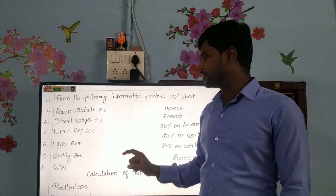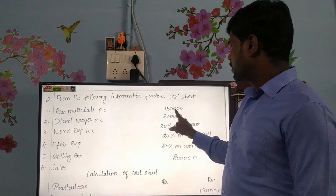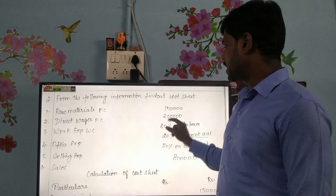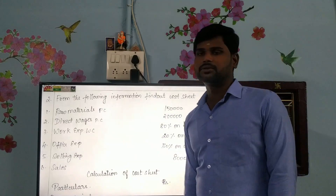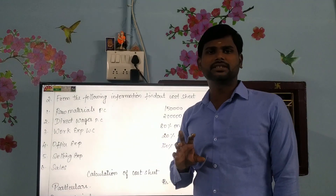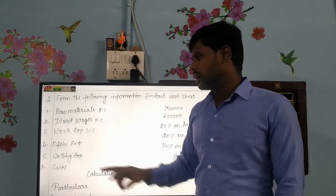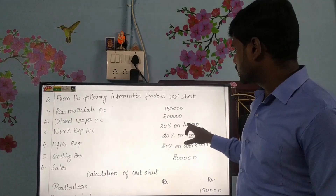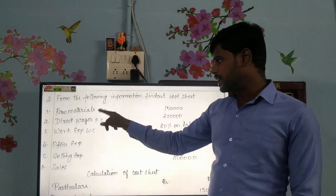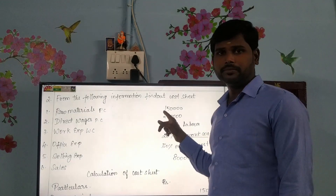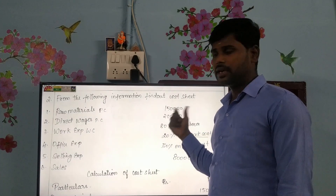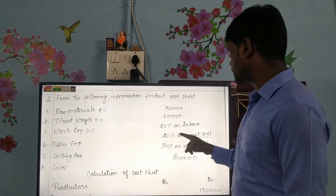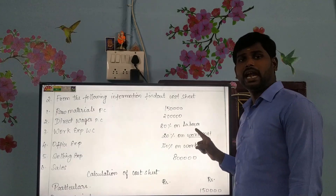Particulars, rupees and rupees. Raw material: Rs. 1,50,000. Direct wages: Rs. 2,000. Next, works overhead — that is works overhead, overrated. The works overhead is 80% of the labour value. Direct wages value is Rs. 2,000; if it is Rs. 2,000, 80% of the labour comes to Rs. 1,600. So works overhead is 80% of the labour.